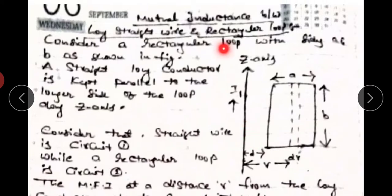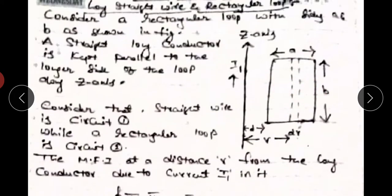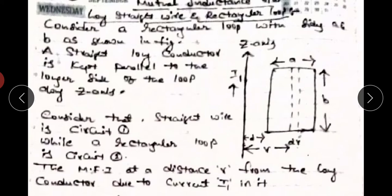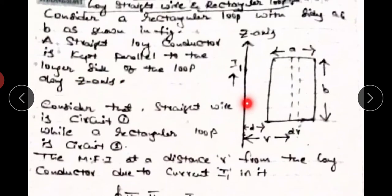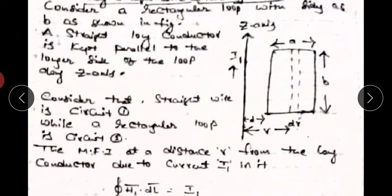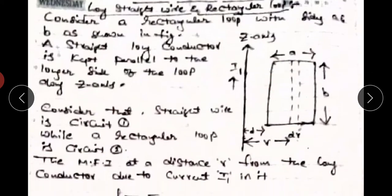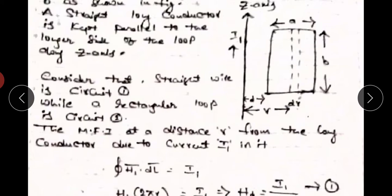Consider a rectangular loop with sides A and B, as shown in the figure. A long straight conductor is kept parallel to the longer side of the loop along the Z-axis. This straight conductor lies along the Z-axis and is parallel to the longer side of the rectangle.